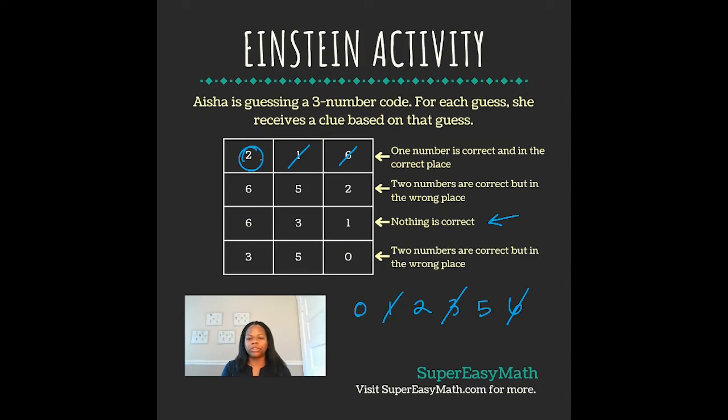So I know, between what we figured out previously and this clue, that two has to be in the first position of our three-digit code.